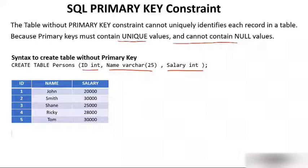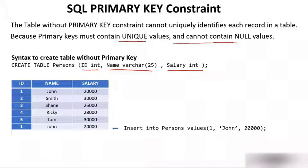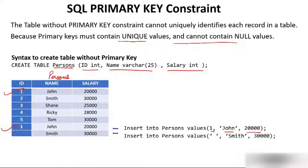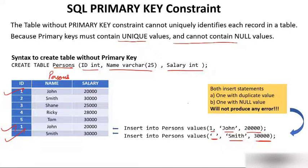Now let me show what the problem is with this table. If I try to insert into person values (1, 'John', 20000), I am able to insert this duplicate value because this value is already in the table — this is because there is no primary key. Similarly, I can insert null values: insert into person values (null, 'Smith', 30000) — no id, and I am able to insert it just because there is no primary key. Both insert statements — one with a duplicate value and one with a null value — will not produce any error because the table was not created with a primary key.